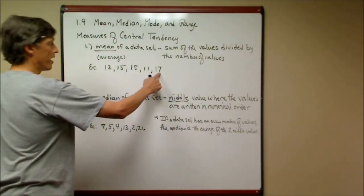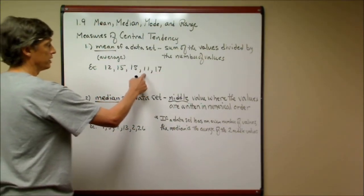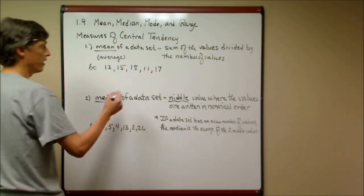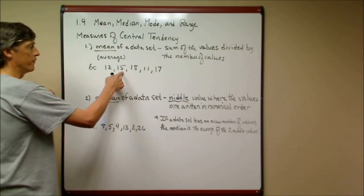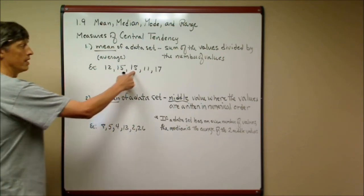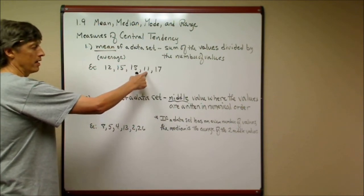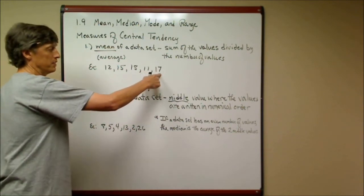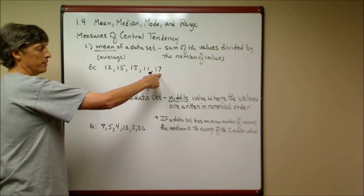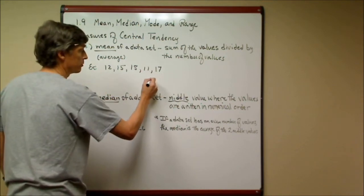Here I have five values: 12, 15, 18, 11, and 17. If I was to add those up, 12 and 15 is 27, and 18 would be 45. 45 and 11 would be 56. 56 and 17 would be 73. This would add up to 73.